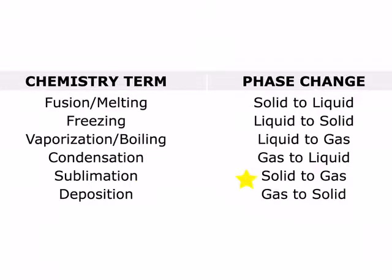Sublimation is solid to a gas. You might be wondering when that happens — a good example of that is dry ice. Dry ice is frozen carbon dioxide and it converts pretty immediately into the gas form of carbon dioxide. And then deposition, which is gas to solid. An example of deposition could be frost at night where water vapor is turned directly into ice.